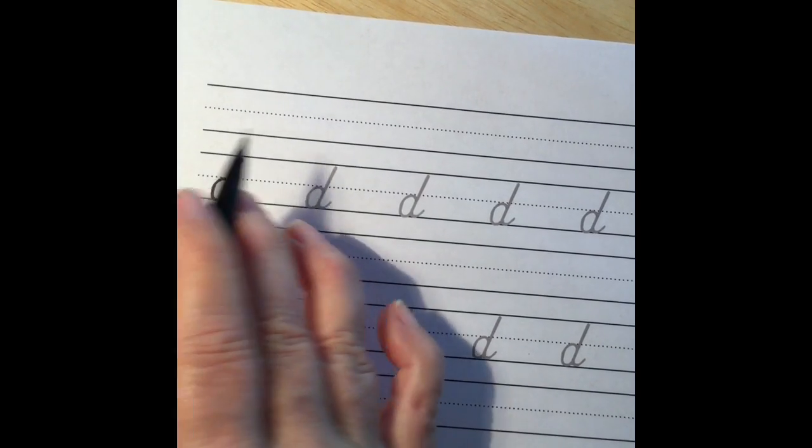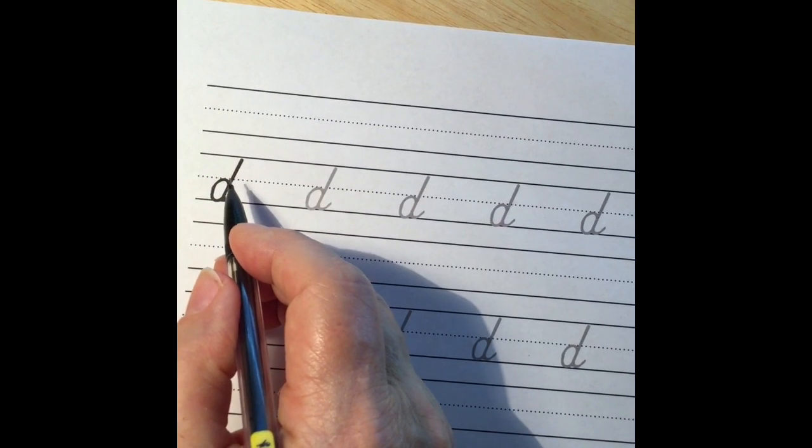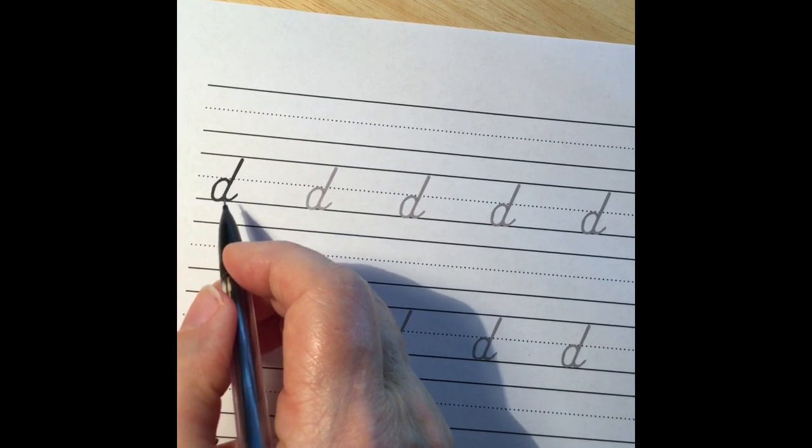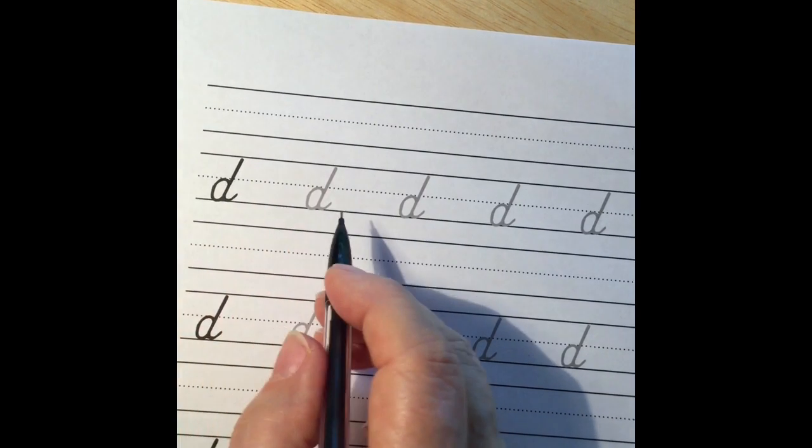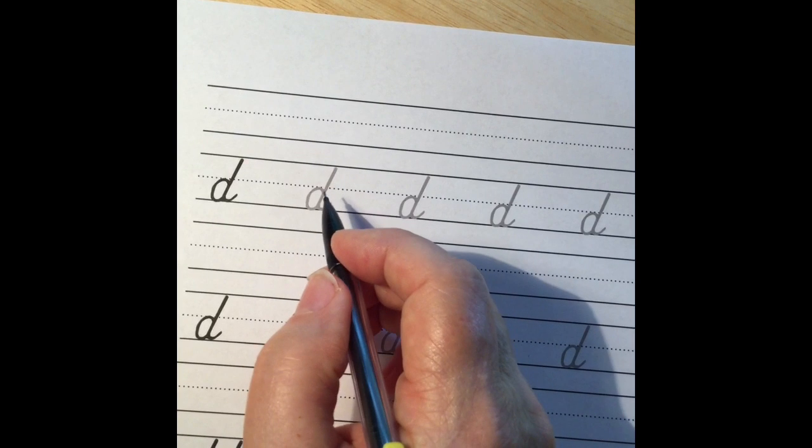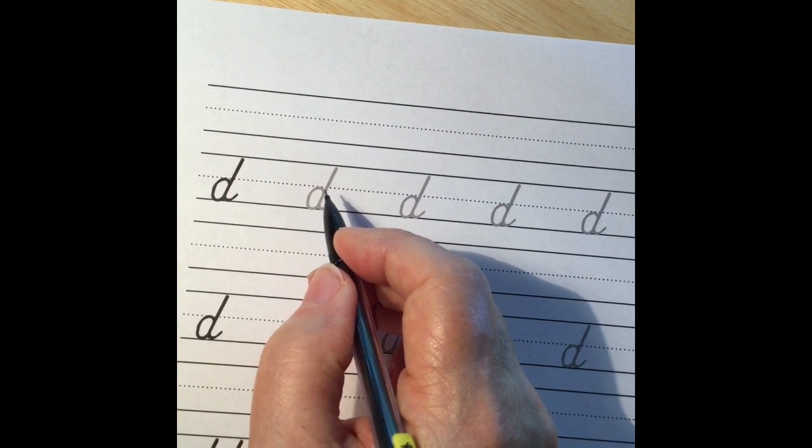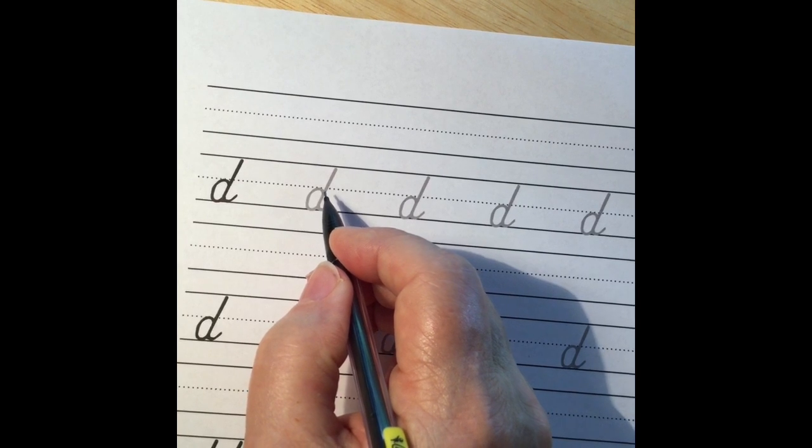Our model reminds us of the steps: the down curve, the long under curve, slant and under curve. And then we have our training wheel letters that we can train our hand to make the letters the right way.